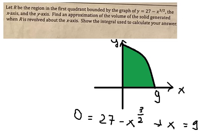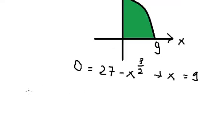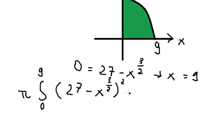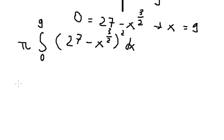π multiplied by the integral from 0 to 9 of (27 - x^(3/2))^2 dx. We calculate this.